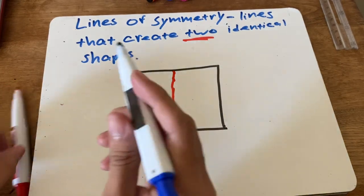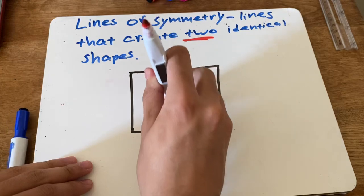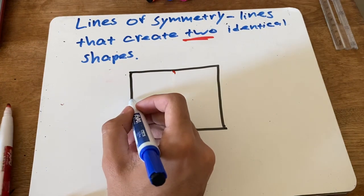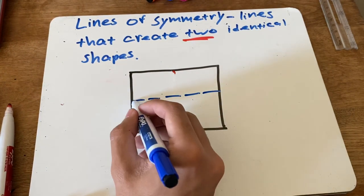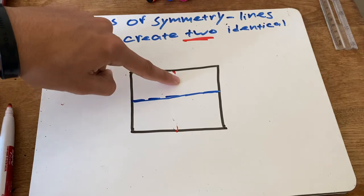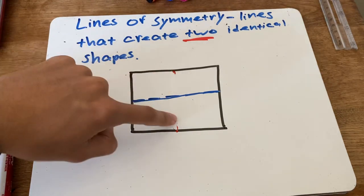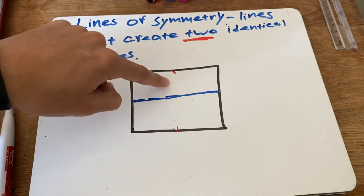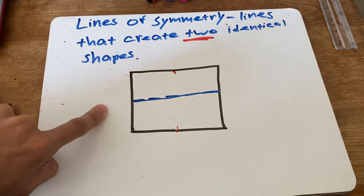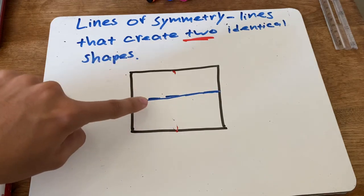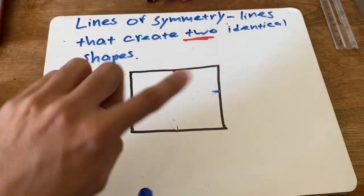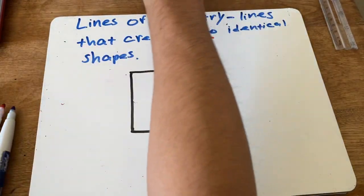What if I cut it a different way? If I cut it this way with the blue line, is this a line of symmetry? Yes, because now the top side is the same as the bottom side — both shapes are identical. So the blue line is a line of symmetry as well. So far we've found two: the red line and the blue line.